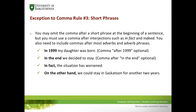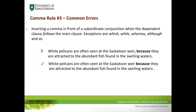When you decide to omit commas from very short phrases at the beginning of a sentence, you need to be consistent and not go back and forth. Another common error with rule number three is inserting a comma in front of a subordinate conjunction when the dependent clause follows the main clause. Exceptions include 'which,' 'while,' 'whereas,' 'although,' and 'as.' You can put commas before these, but not before others — for example, you should not put a comma before 'because,' as putting a comma before 'because' is very seldom correct.